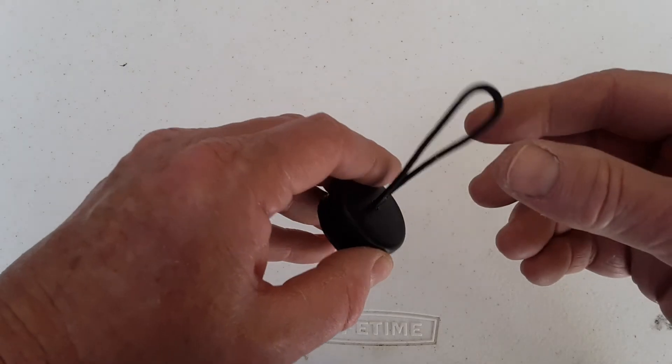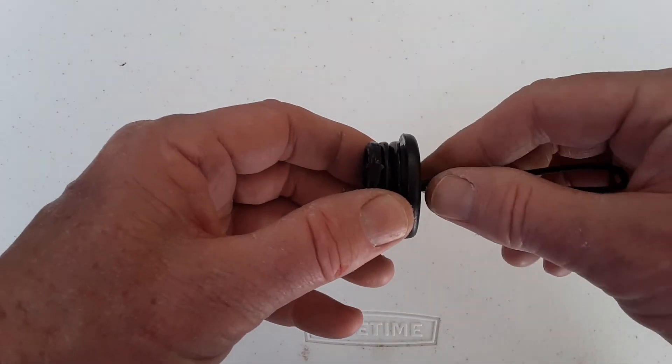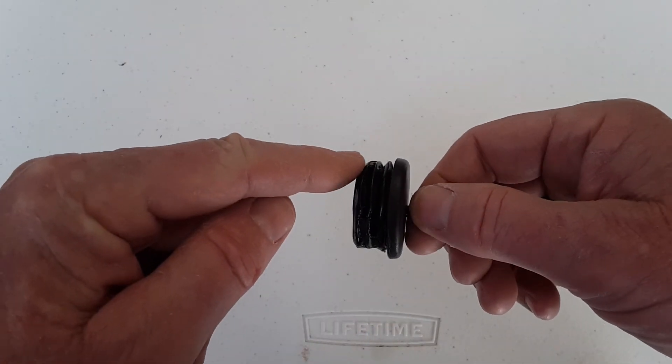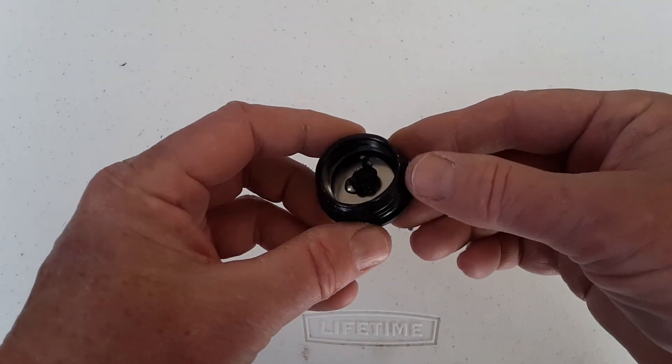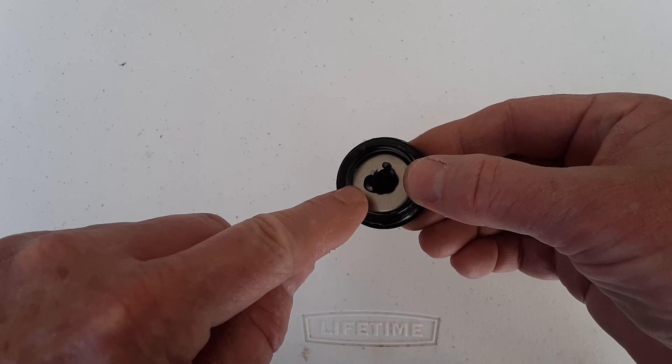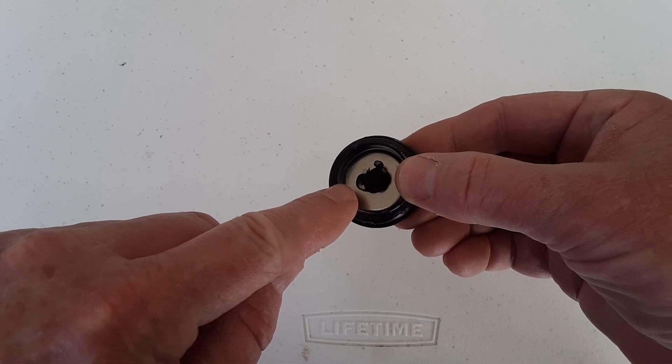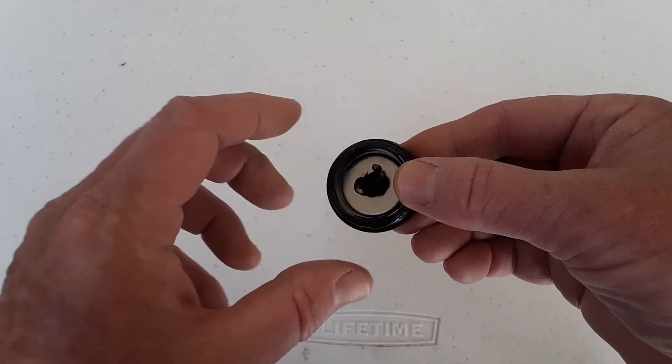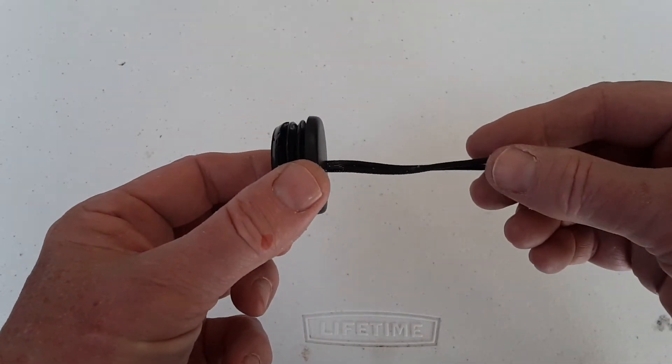So this is your finished scupper plug. You have your paracord loop. You have your plug here that's been heat formed. And then you've got the stainless steel washer inside here with the knot on the other side of the paracord. And then everything is held together and sealed with marine goop.